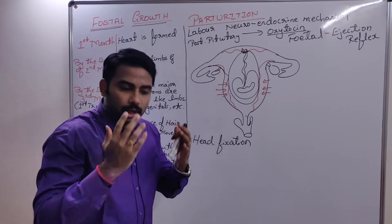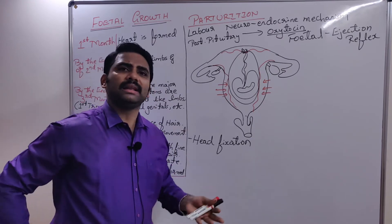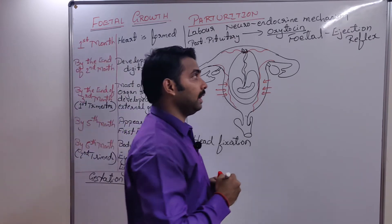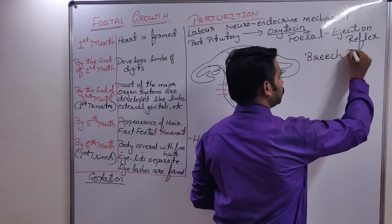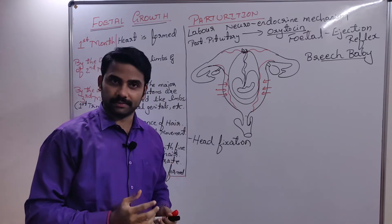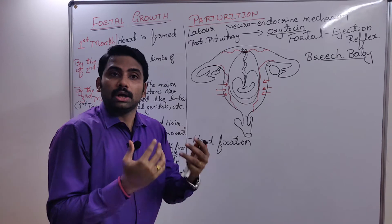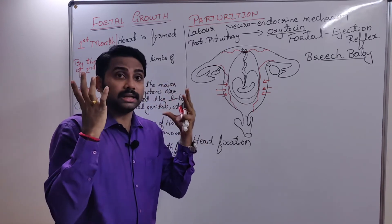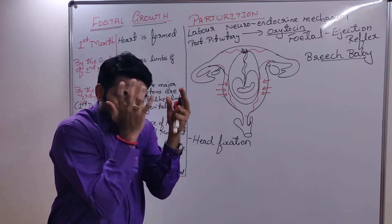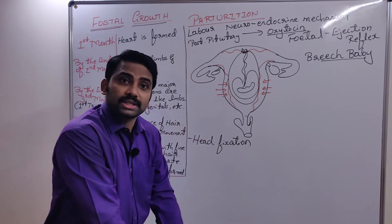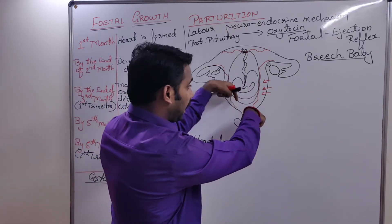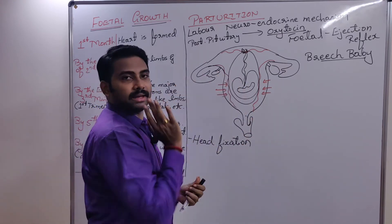In very rare cases, babies are born with the leg first — such babies are called breach babies. Usually, the baby comes head first because the head has a larger diameter compared to the shoulders. If delivery were leg-first, complications could arise — one leg might pass through and the other might not. That is why head-first delivery is the normal process.